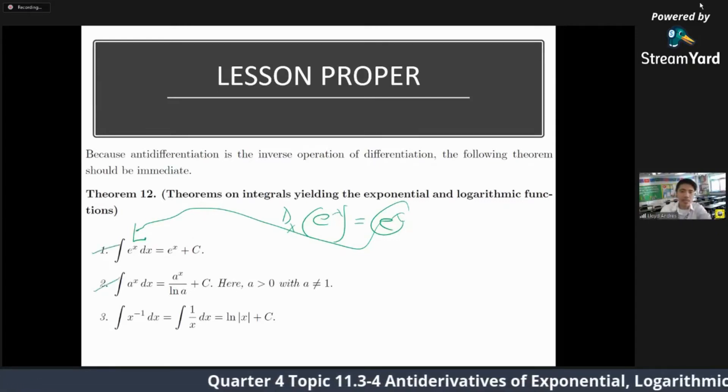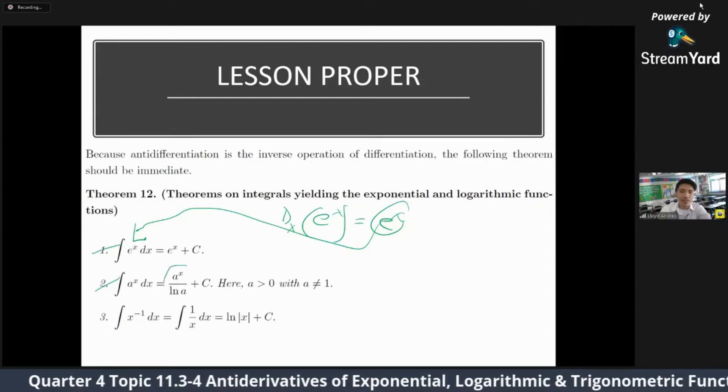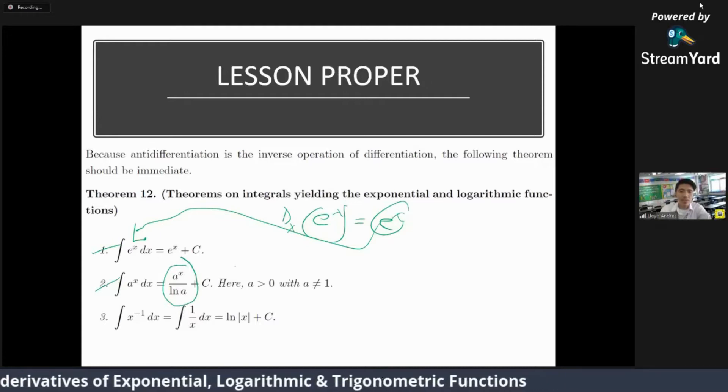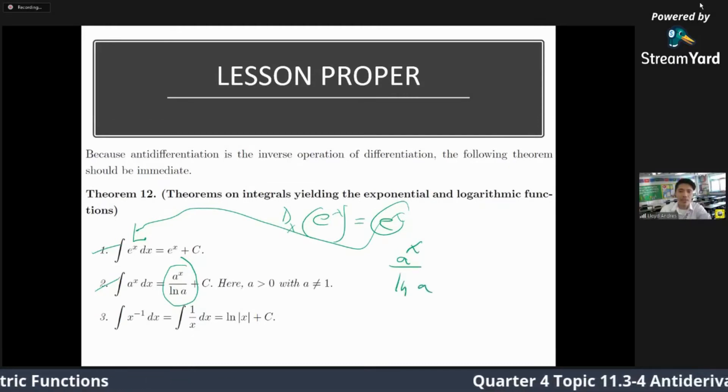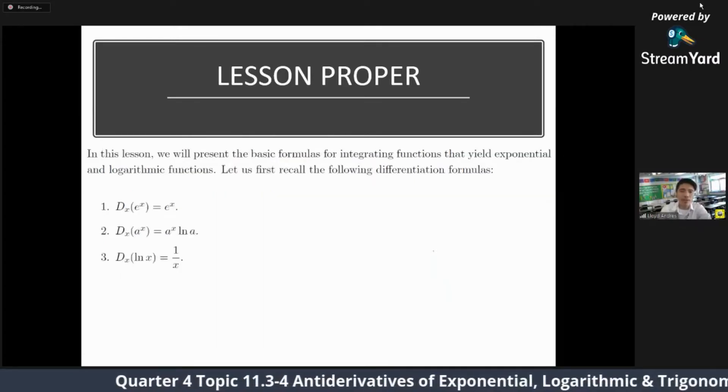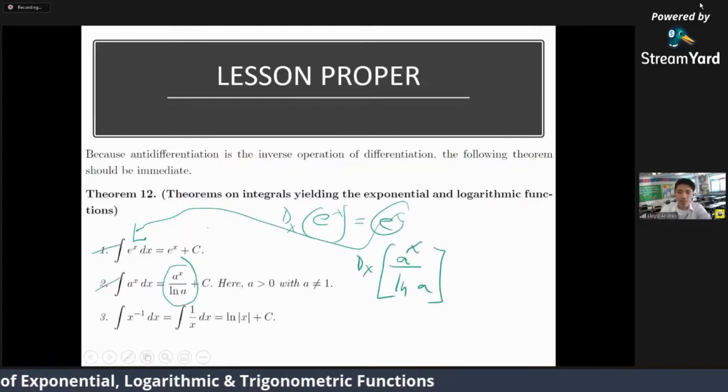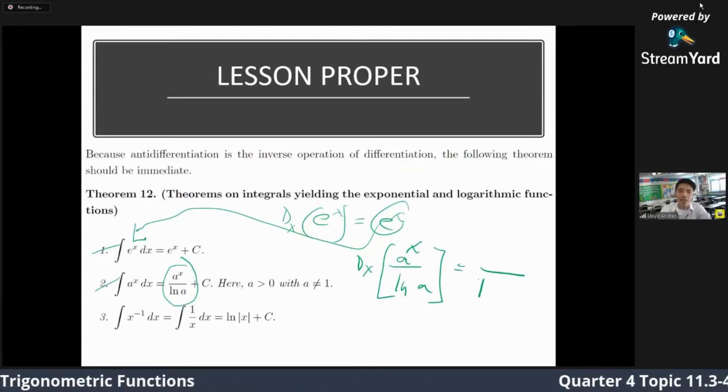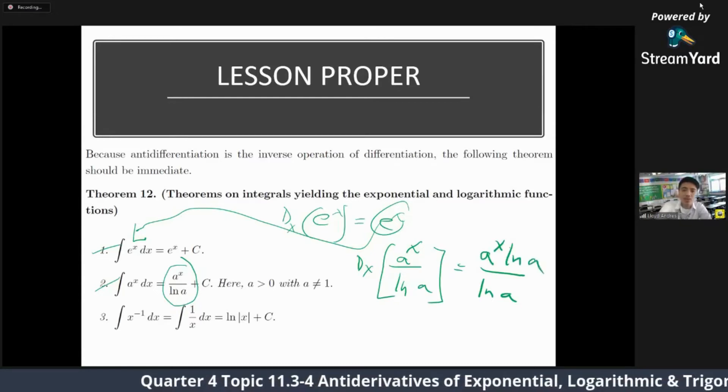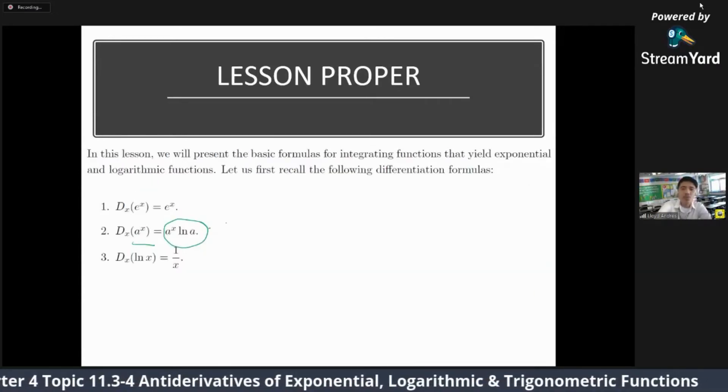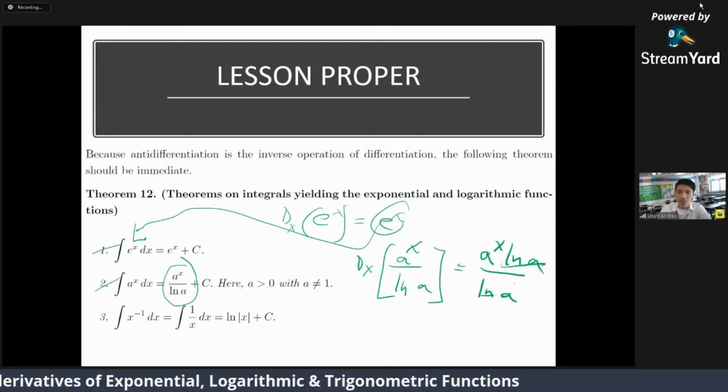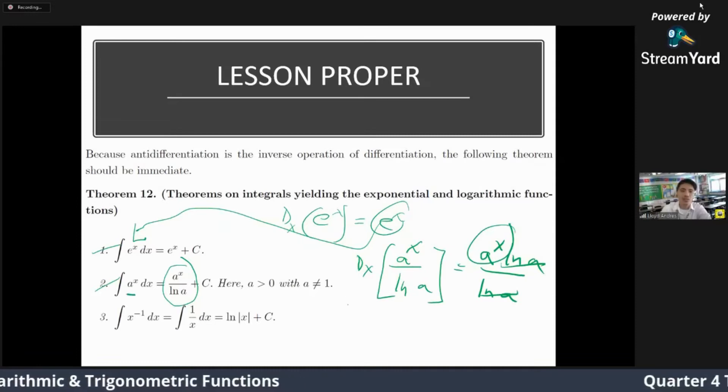The integral of a raised to x dx is actually this. Where does this come from? We have a^x over ln of a. If we differentiate this one, recall earlier that when you differentiate a raised to x, this is the answer. So we use that. Actually, ln of a is a constant, so just copy ln of a. The derivative of a raised to x is a raised to x ln of a. This is the one we have. So this cancels out, so a raised to x is the answer. So we get back a raised to x. So that's another theorem.